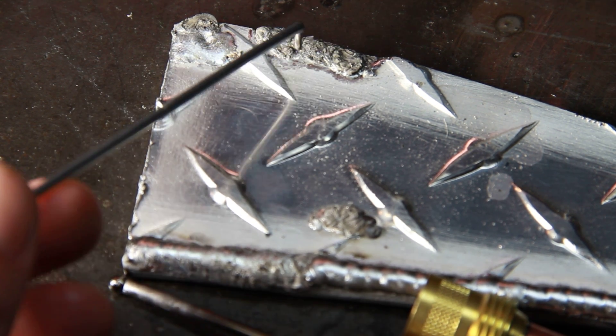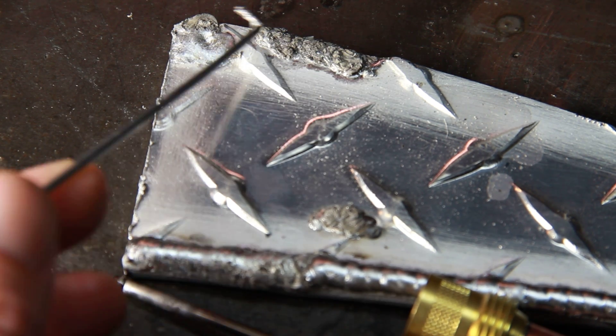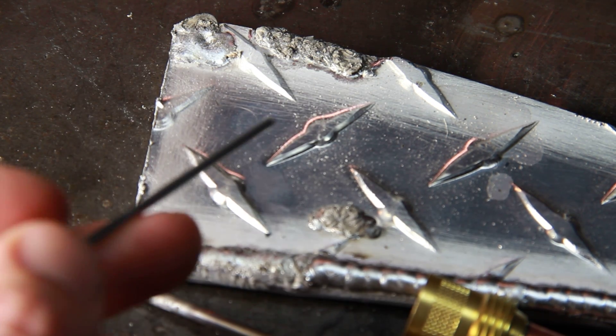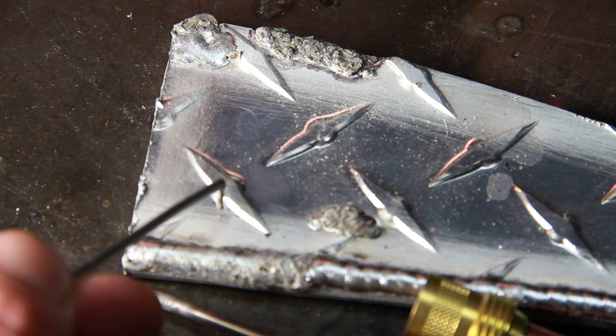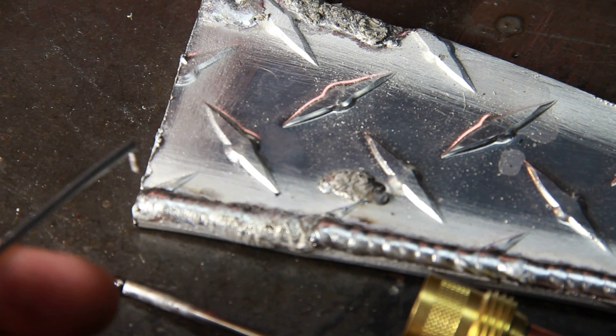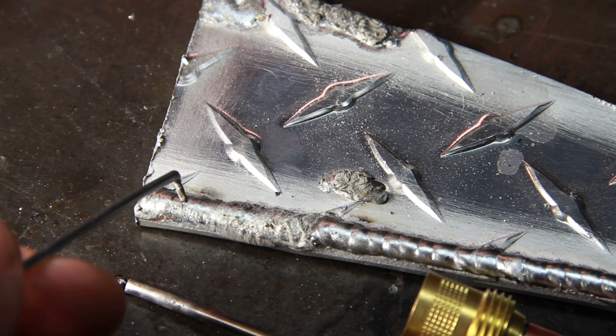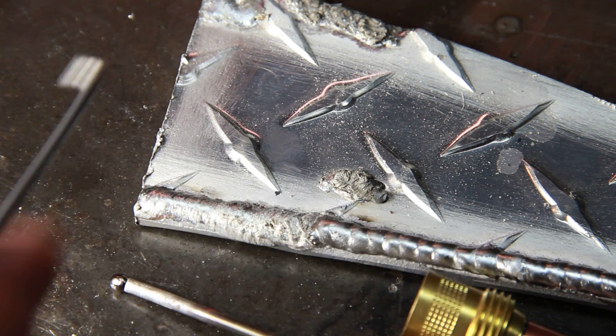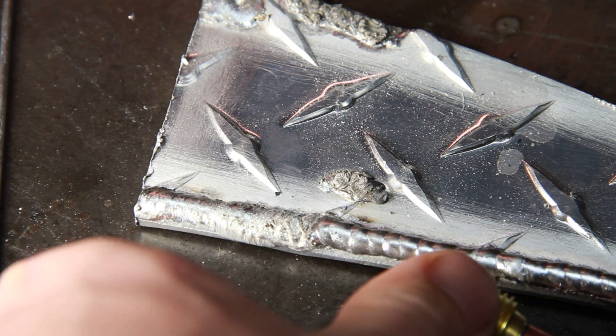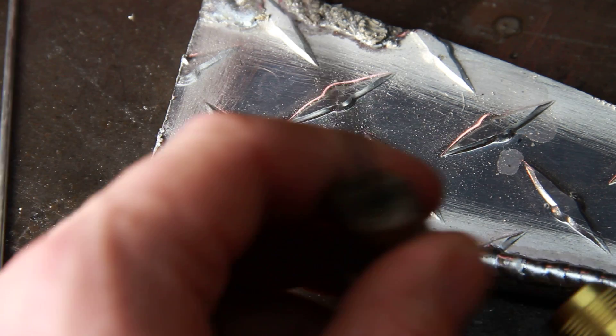If you're having trouble with AC TIG and it looks like this, and you cannot figure out why, you've changed your gas, you've changed your AC balance, and you just cannot get a decent-looking weld out of your machine for some reason, well, here's something that might be the cause that you probably would not think to check.